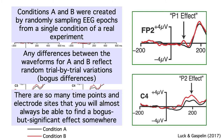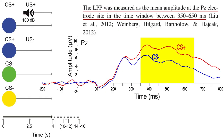So when you're reading an ERP paper, you should look at how they decided which time points and electrode sites to analyze. Ideally, the researchers will have chosen their time windows and electrode sites before seeing the data, on the basis of prior research. For example, Felix chose to measure the LPP from 350 to 650 milliseconds at the PZ electrode site because that's where other studies have found similar LPP effects.